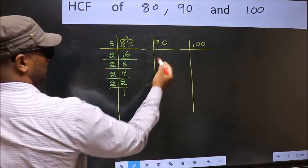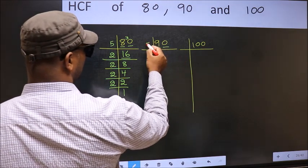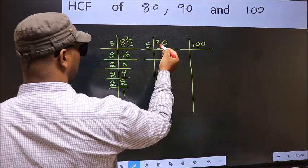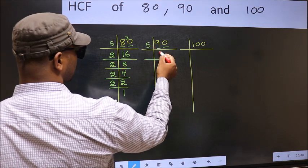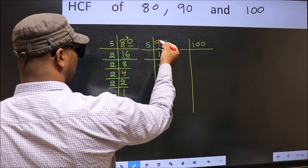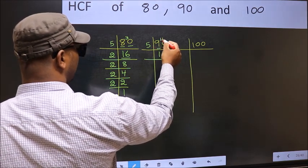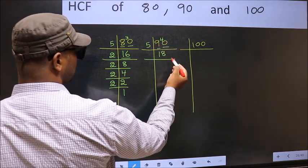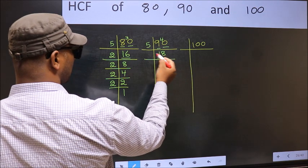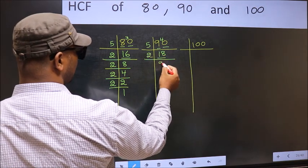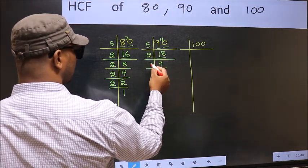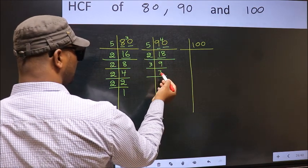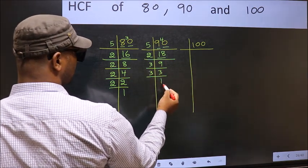Now for 90. The last digit is 0, so we take 5. The first digit is 9; the closest in the 5-times table is 5 once 5. 9 minus 5 is 4, carried forward to give 40. In the 5-times table, 5 eights are 40. Now 18 is 2 nines; 9 is 3 threes. We have 3, which is a prime number, so 3 once 3.